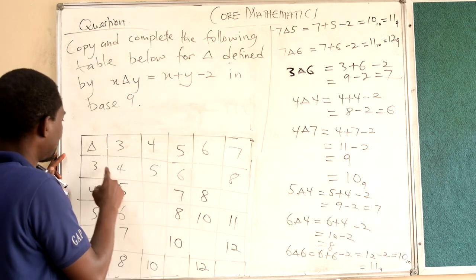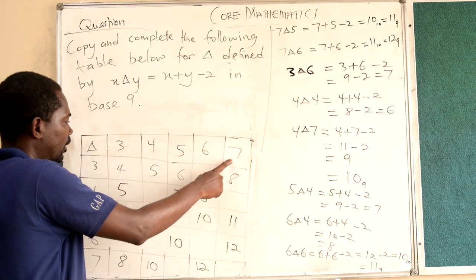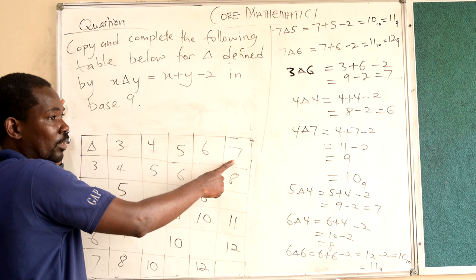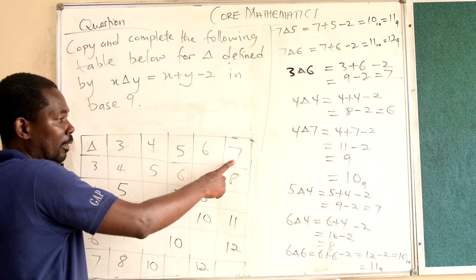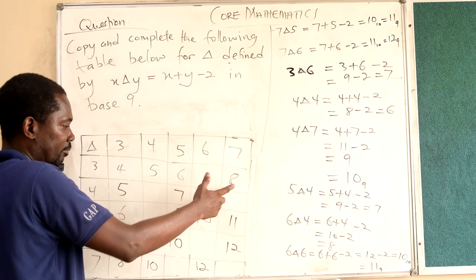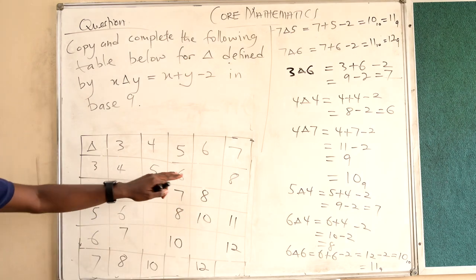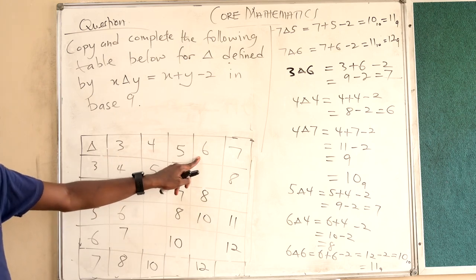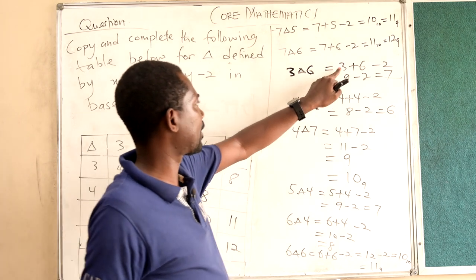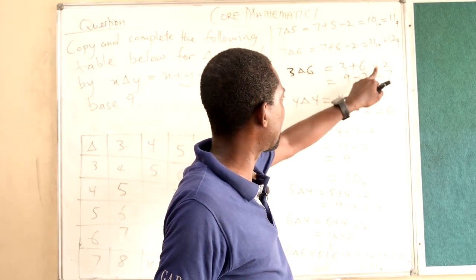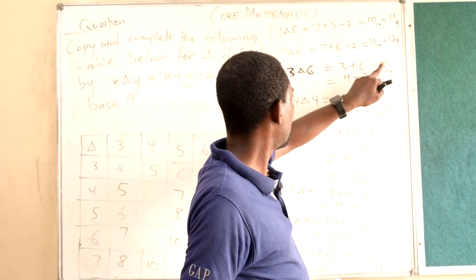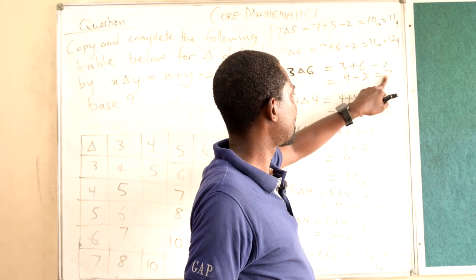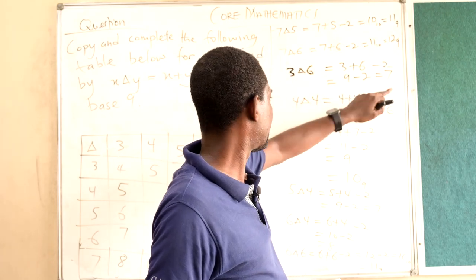Now 3 triangle 7 is 3 plus 7, which is 10, minus 2, which is 8. Now let us look at 3 triangle 6: that is 3 plus 6 minus 2, which is 9 minus 2, which is 7.